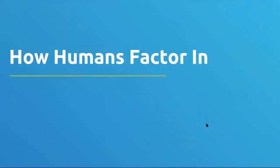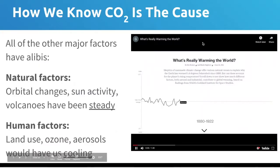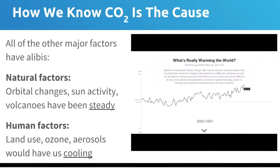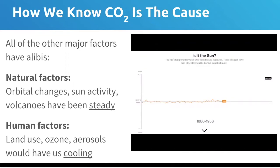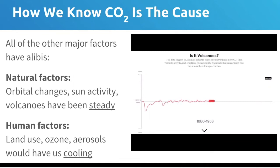Why do we know that CO2 particularly is the cause of the recent warming? Someone might ask about correlation versus causation — we've observed global temperatures going up and carbon dioxide increasing from human activities, but how do we know those two things actually go together? We can look at the other important drivers of our climate and ask whether or not they've changed.